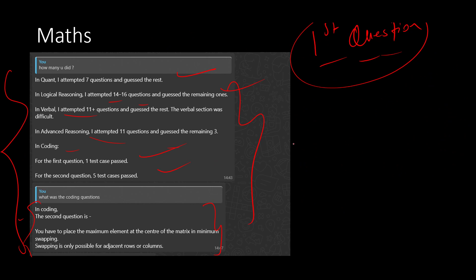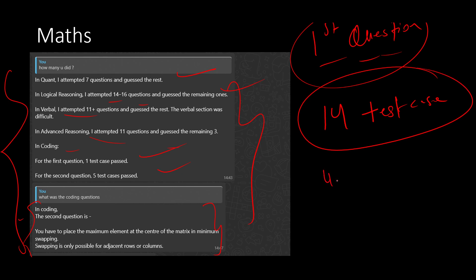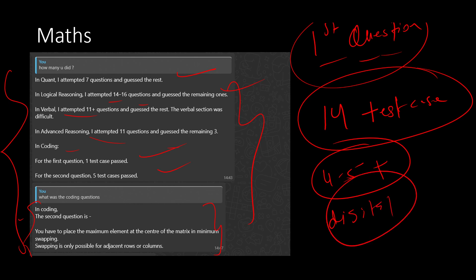Regarding the coding questions — I'm not sure what the first question was. Overall, there are a total of 14 test cases across both questions. If you have passed four to five test cases combined, there is a chance for Digital. If you have passed seven to nine or more test cases, there is a chance for Prime.